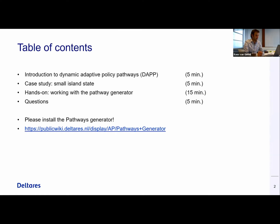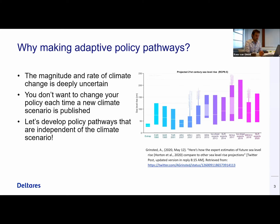What I will do is introduce the concept of dynamic adaptive policy pathways, give a short introduction to a case study which we will use to make pathways ourselves, and the core of this presentation will be an actual hands-on exercise to work with the pathway generator. Please install the pathway generator — it's a very easy tool downloadable from the link in the chat. On the Wikipedia page you can also find more information on how the tool works. Why should you want to make adaptive policy pathways? We know that the magnitude and the rate of climate change is very uncertain, so new climate scenarios come in and you would have to alter your policy based on them.